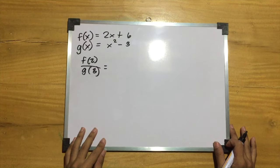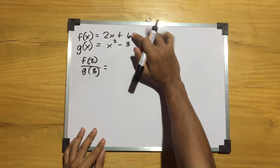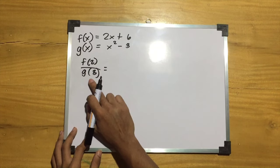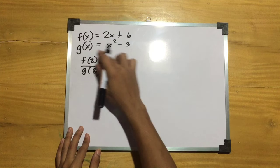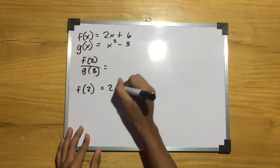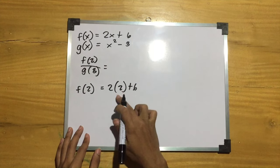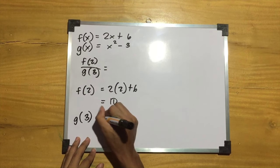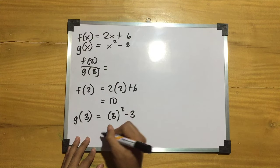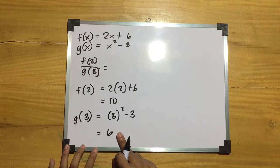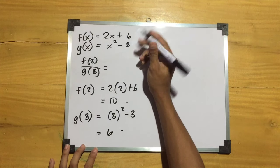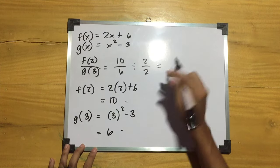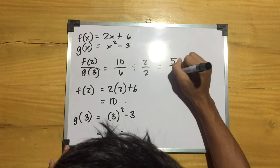Now let's solve the quotient of functions with the same equations. We will find f(2) over g(3). First, solve f(2): f(2) equals 2 times 2 plus 6 equals 10. Next, solve g(3): g(3) equals 3 squared minus 3 equals 9 minus 3 equals 6. So f(2) over g(3) equals 10 over 6. Simplifying by dividing both by 2 gives 5 over 3.